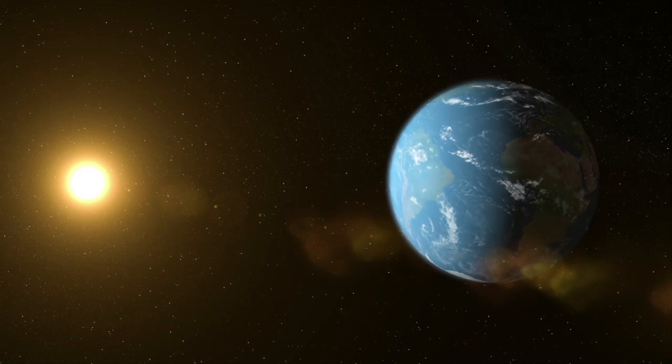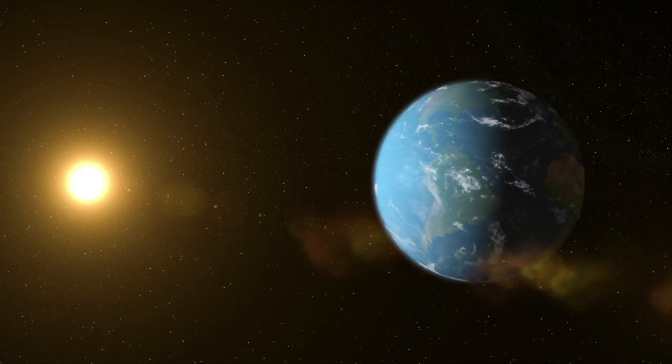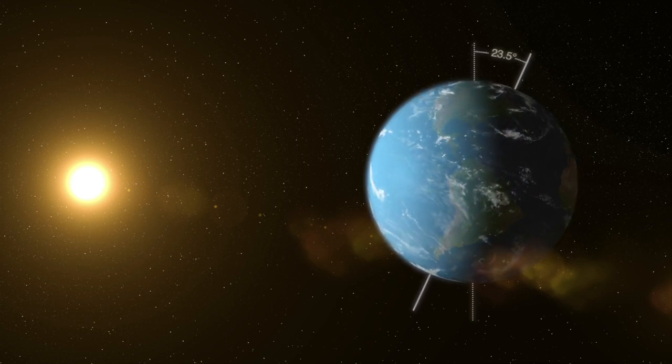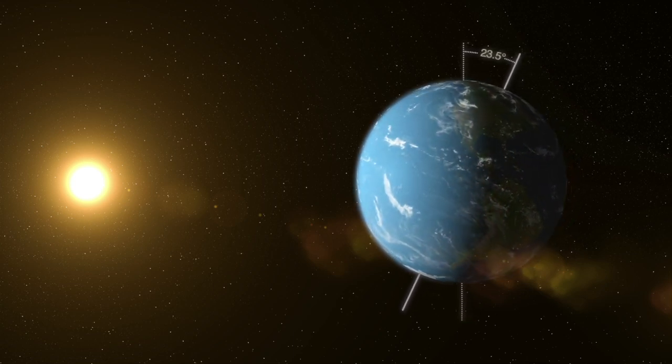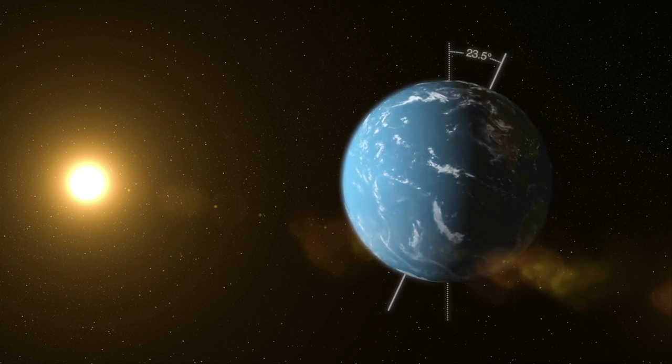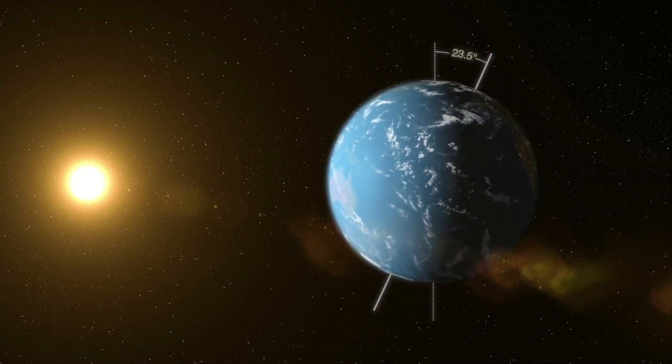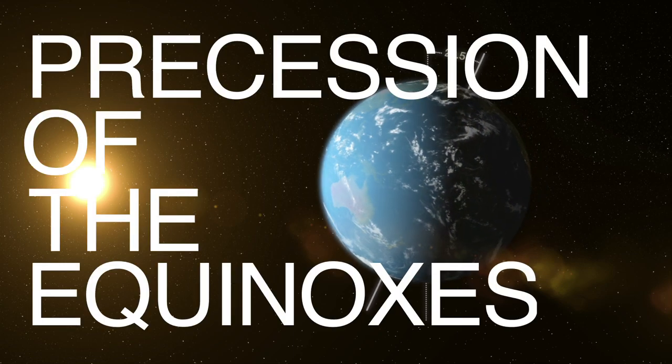In astronomy, we are most interested in the precession of Earth. The orbital tilt obliquity of Earth is 23.5 degrees. Thus, the axis of Earth's rotation traces out a cone of half-angle 23.5 degrees in a period of roughly 26,000 years. This effect is often referred to as precession of the equinoxes.